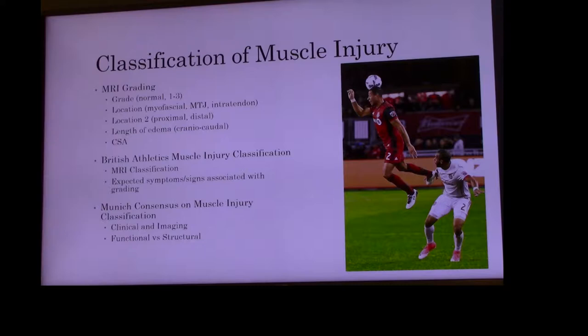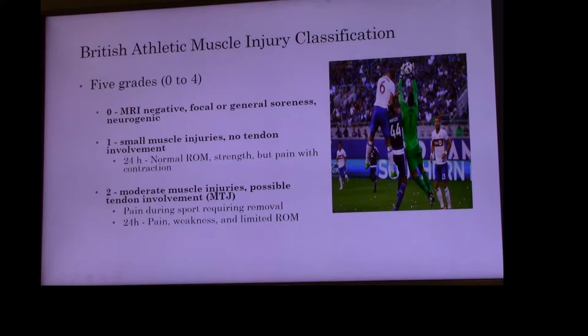People don't really care if it's a grade one, two, or three — they want to know when they can go back. The British Athletic New Muscle Injury Classification, which is more track and field, used five grades. Grade zero would be MRI negative, just general soreness or neurogenic cause.